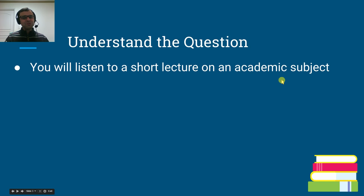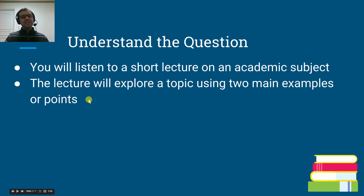You're going to listen to a short lecture on an academic subject. For type six, there's no reading. There is just a lecture and it's on an academic subject. It's not about campus life like the other speaking question. It's about an academic subject, something that you might study as a university student. This lecture is going to explore that topic, that academic subject, using two main examples or points. So, to elaborate on that, the lecturer, of course, has a main argument that he's making about the subject, and he explores that argument using two main examples or points.